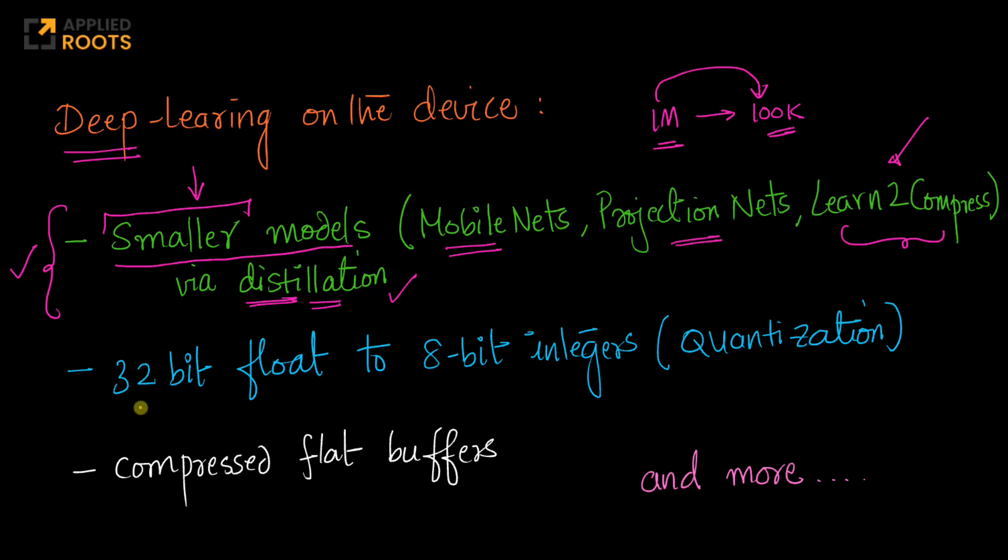Similarly, another very simple engineering hack is, when you train a deep learning model, probably you're using 32-bit floating point values. You can take these 32-bit floating point values and quantize them to 8-bit integers, because on most mobile processors, 8-bit integer operations are faster.